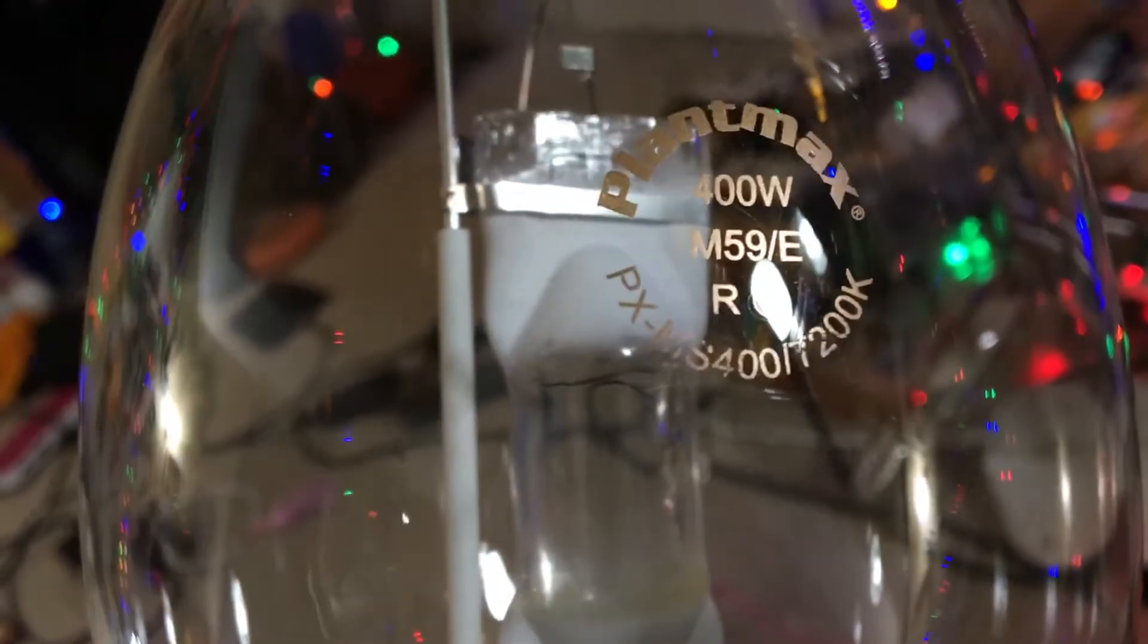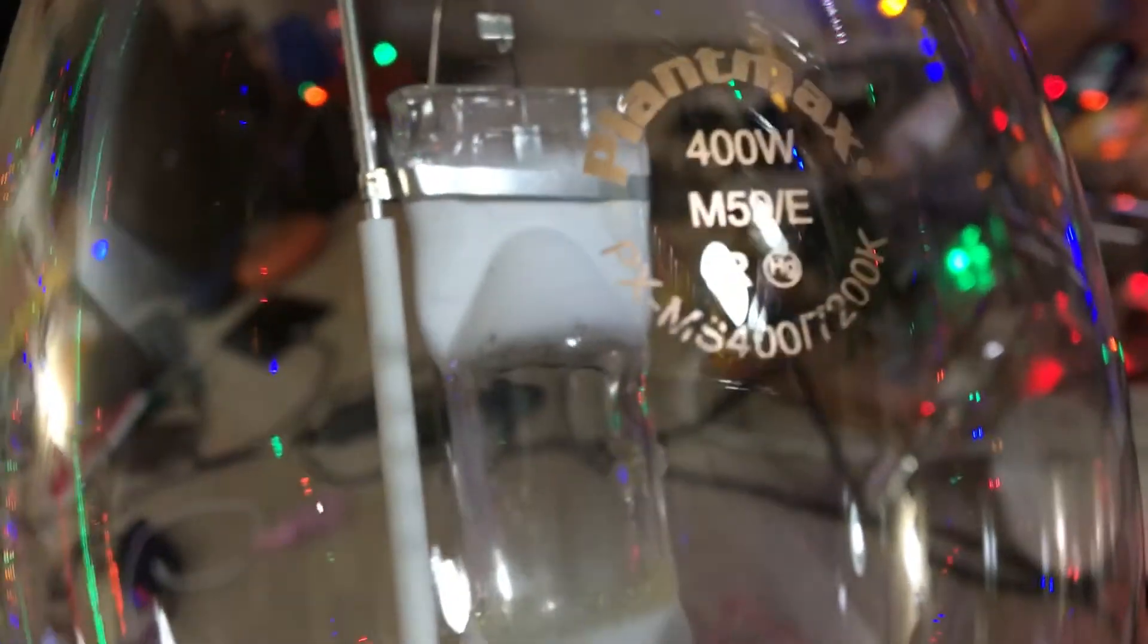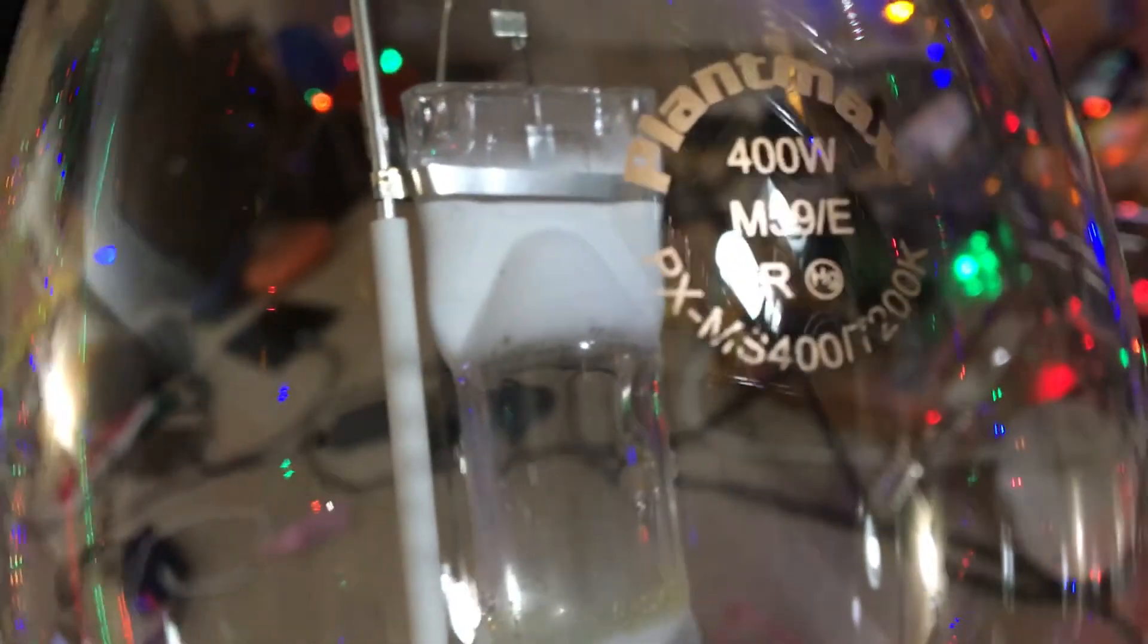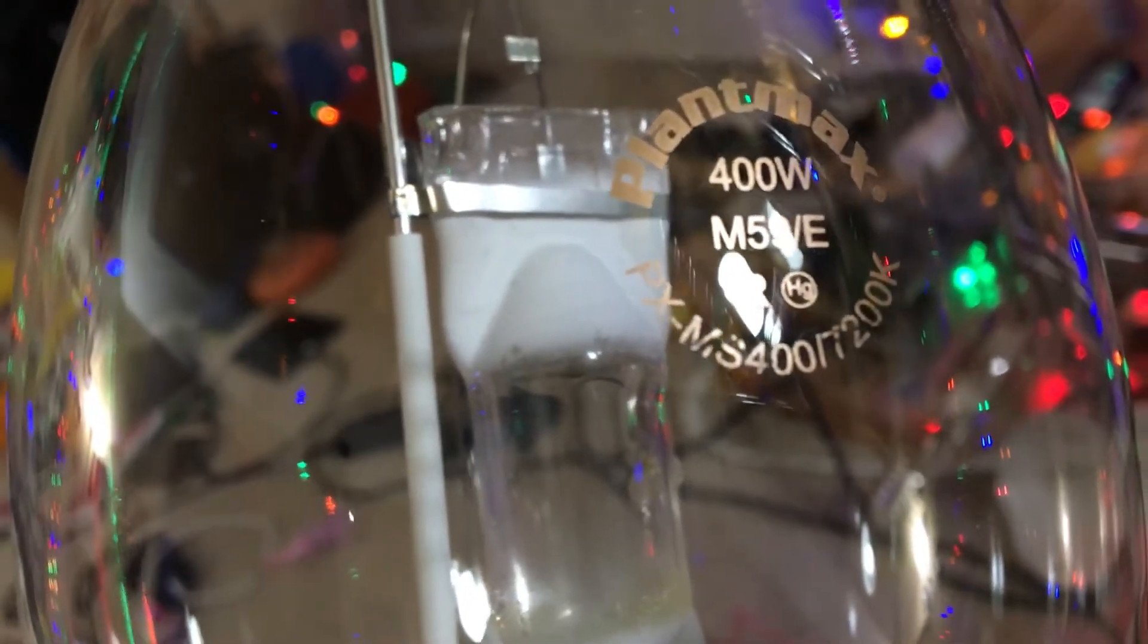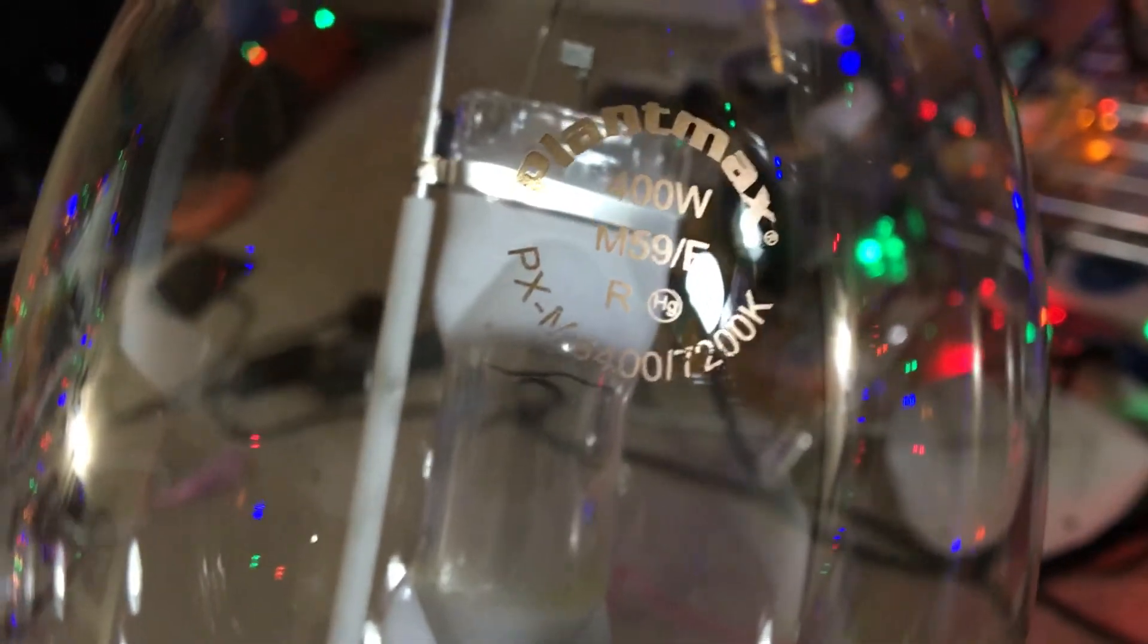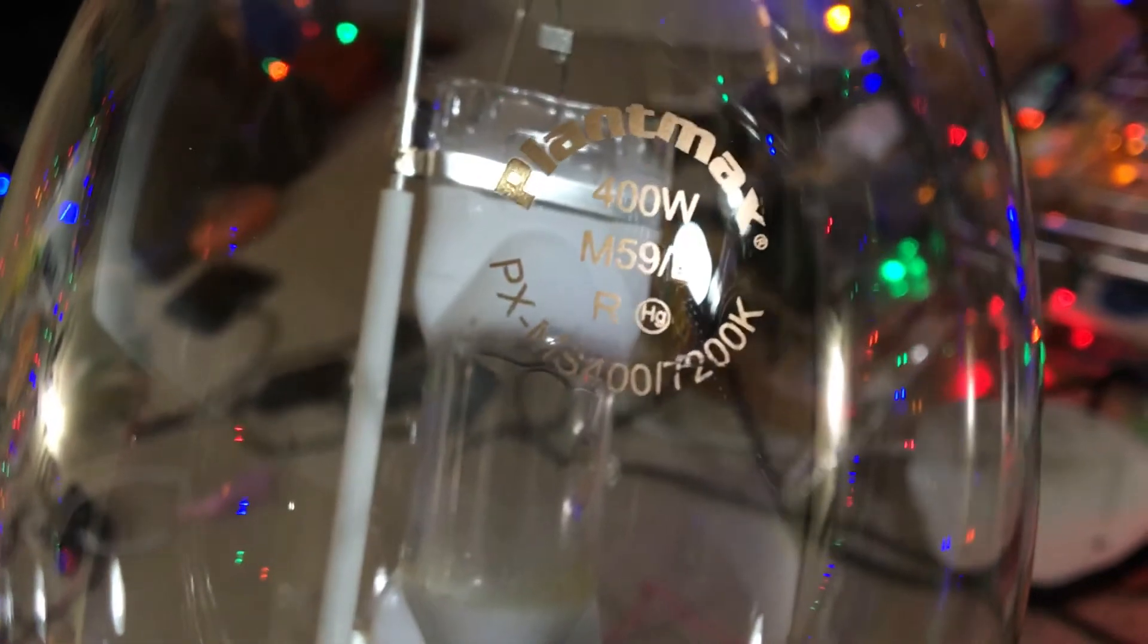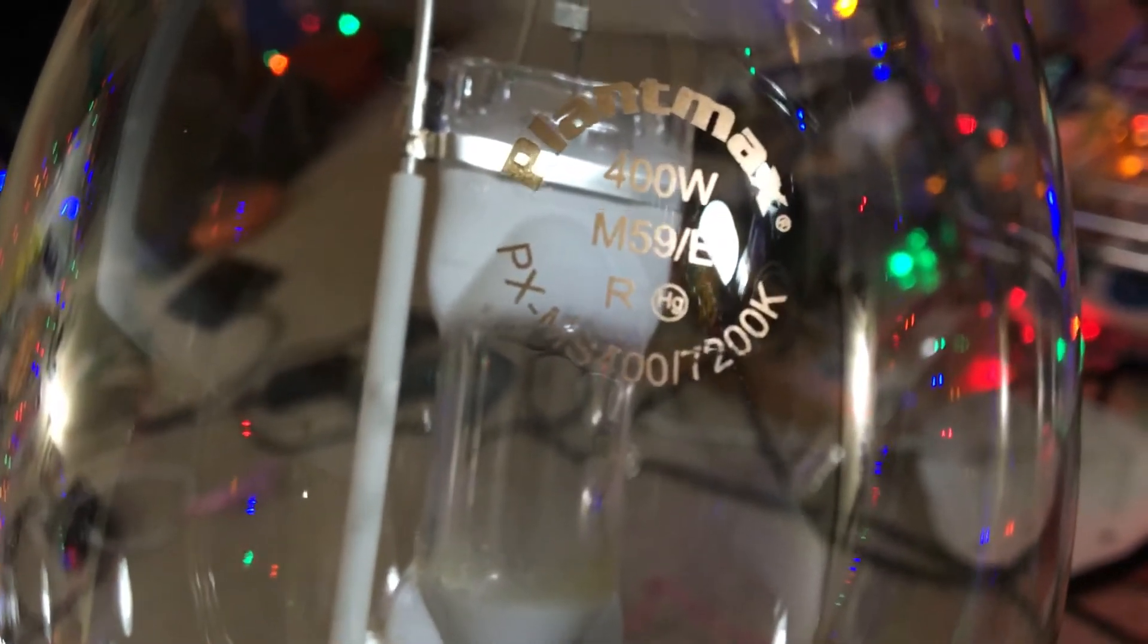And then of course our lamp description ends on the bottom. The PX meaning PlantMax, which is the company name, and then the MS400 tells me that this is a super metal halide grow lamp because this is actually used for vegetative growth. The MS tells me that it's a super metal halide, and then the 400 tells me that's the watts. Our color temperature is listed right here. It is 7200 Kelvin, and this is actually higher than my PlantMax 400 watt pulse start metal halide lamp that I made a week ago.